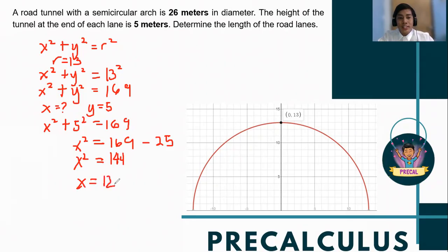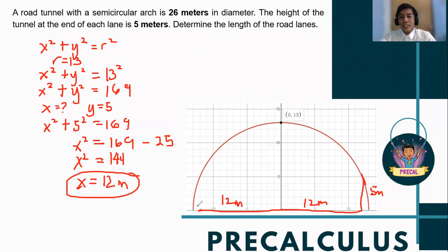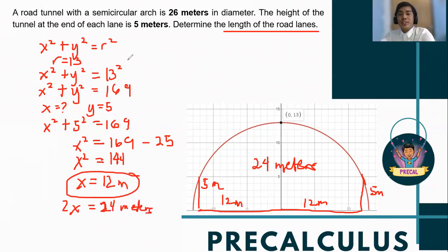Therefore, the length of one of the road lanes is 12 meters. So on the side with a height of 5 meters is 12 meters. On the other side, we also have 12 meters. Although on the Cartesian plane it's negative 12, still the length is 12. Adding 12 meters plus 12 meters will determine the length of the road lanes. So the final answer will be 24 meters, which is also represented by the value 2x. And that is what is being asked in the problem.